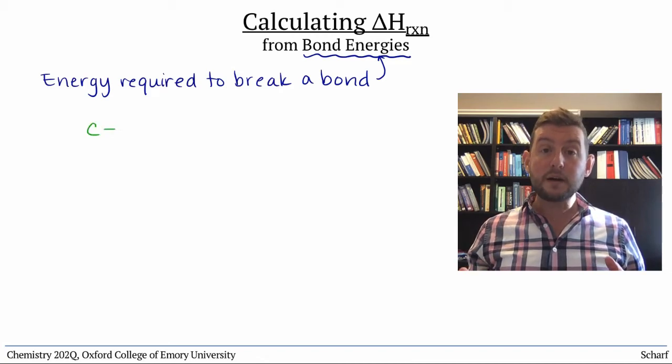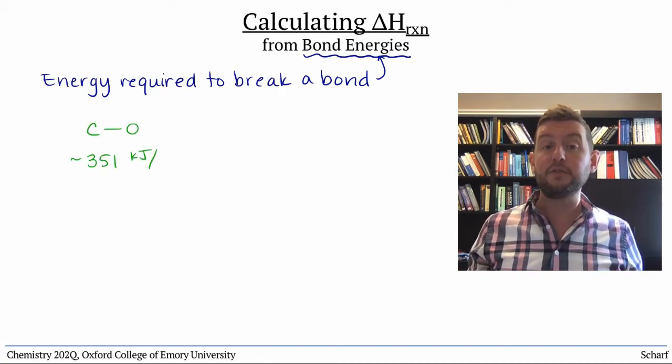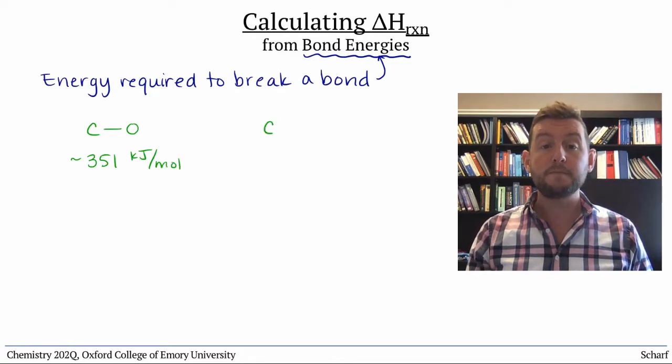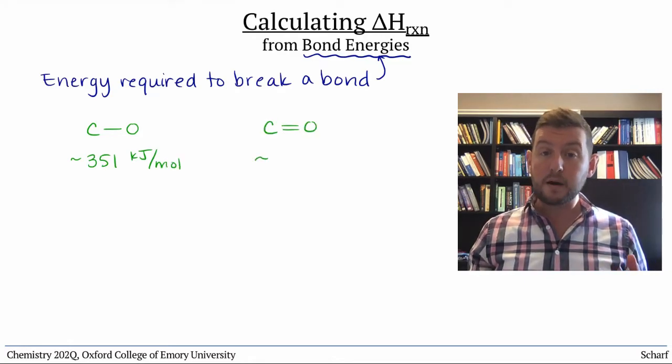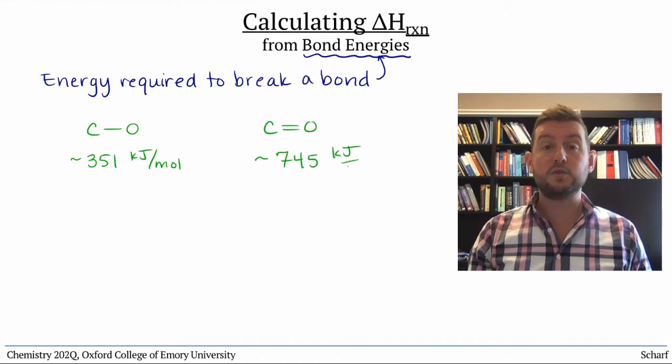Carbon-oxygen single bonds, for instance, have an average bond enthalpy of about 351 kilojoules per mole, while carbon-oxygen double bonds have an average enthalpy of about 745 kilojoules per mole.